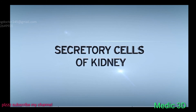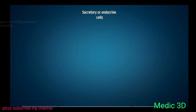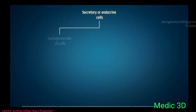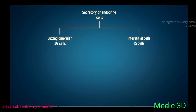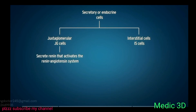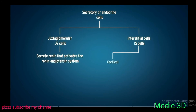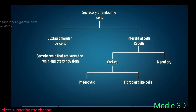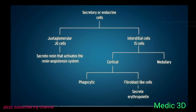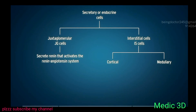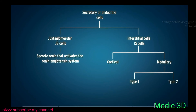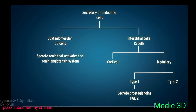The secretory or endocrine cells in the kidney are mainly of two types: juxtaglomerular (JG) cells and interstitial cells (IS cells). JG cells secrete renin, which activates the renin-angiotensin system. There are two types of interstitial cells — cortical and medullary. Cortical interstitial cells are of two types: phagocytic and fibroblast-like cells. Fibroblast-like peritubular interstitial cells secrete erythropoietin. Medullary interstitial cells are of two types: type 1 and type 2. Type 1 medullary interstitial cells secrete prostaglandins, especially PGE2.